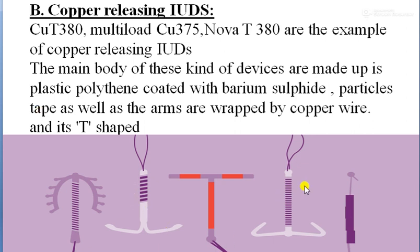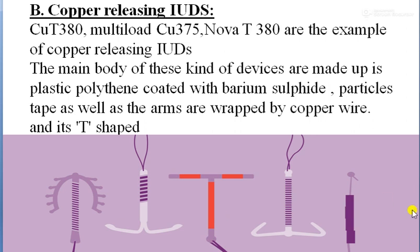As you can see in this picture, there are different types of copper-releasing devices. You can see the copper wire on the vertical arms. There is a T-shepherd designed IUD wrapped with copper wire. The red and blue one also has a T-shepherd design, and both horizontal arms are wrapped with copper wire.